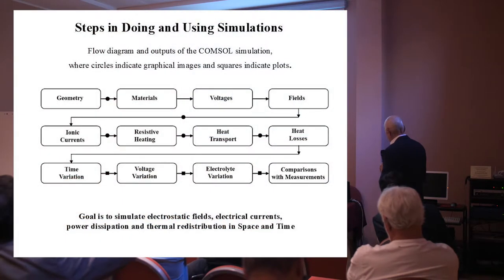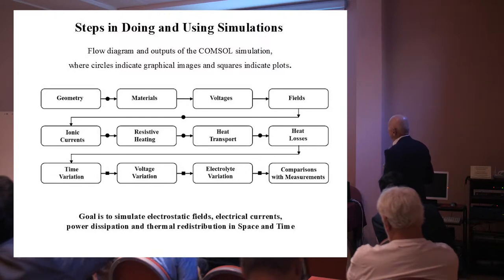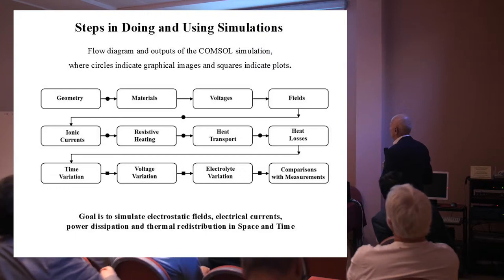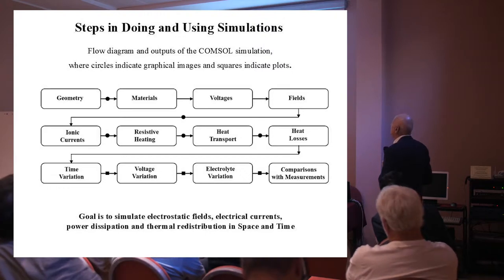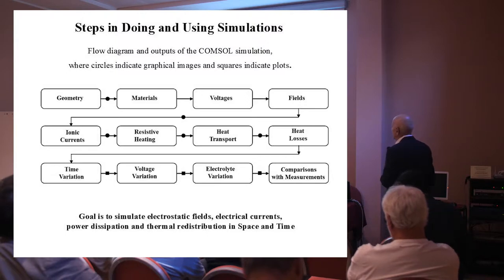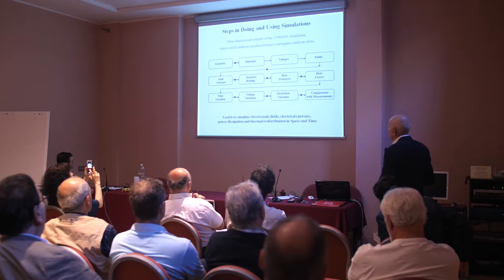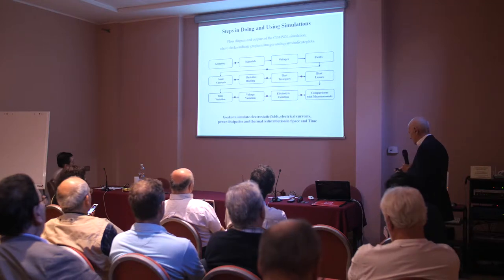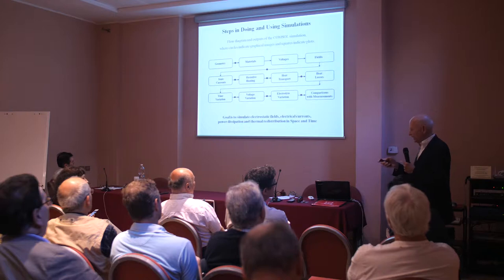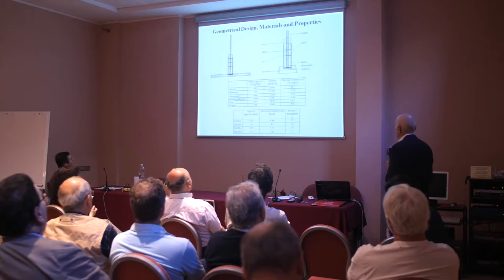This is a flow diagram of what you have to do to run a COMSOL simulation. You first specify the geometry, then specify what the materials are in that geometry. You apply voltages, get fields, get currents, resistive heating, heat transport, and heat losses. Then you can do parametric variations as a function of time or voltage, compare with the measurements. The rest of this talk, the simulation part, I'll be walking through these various steps.